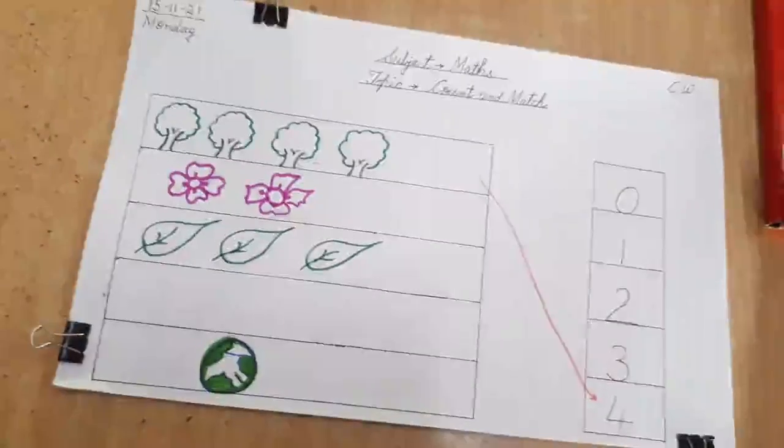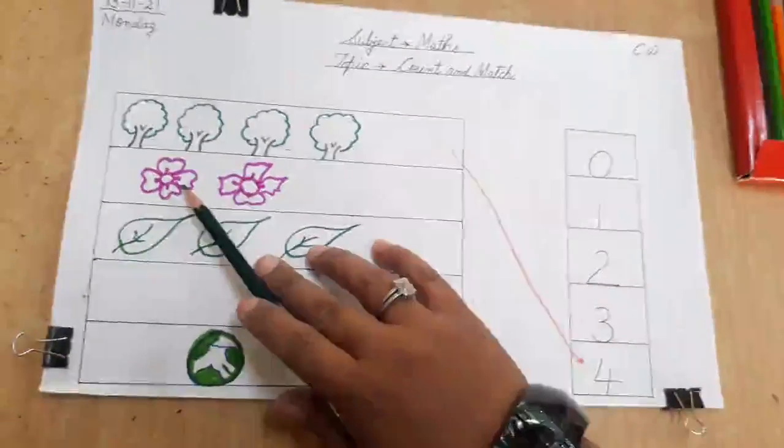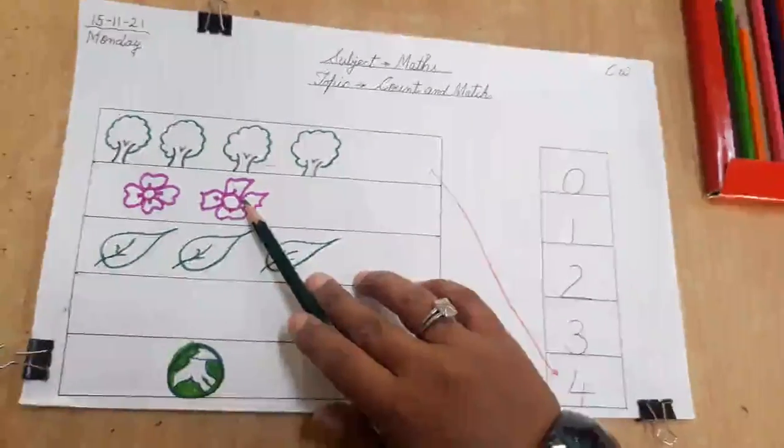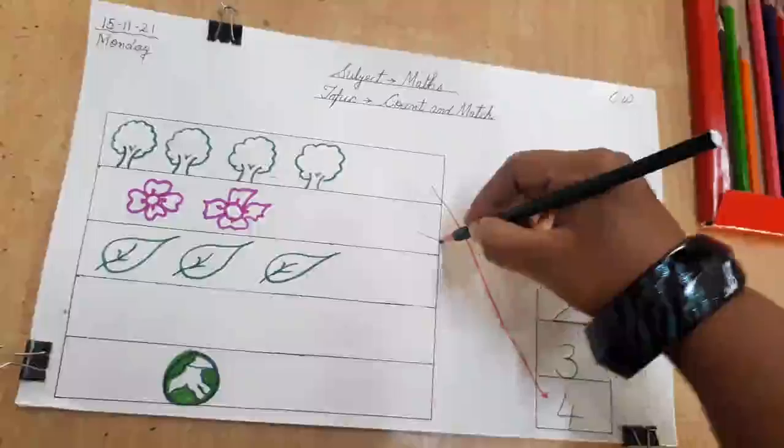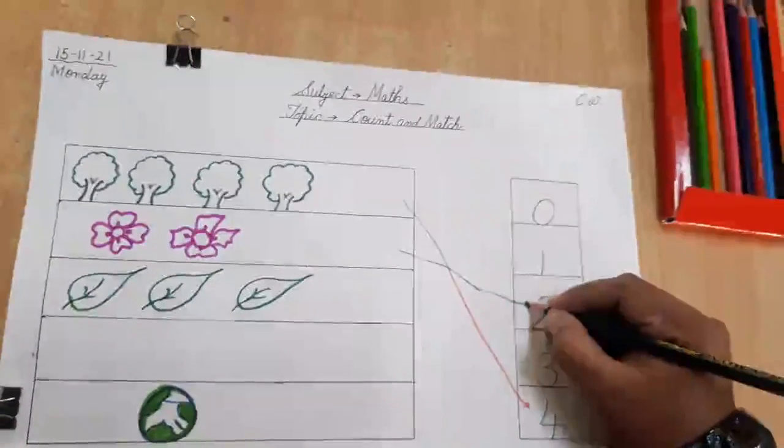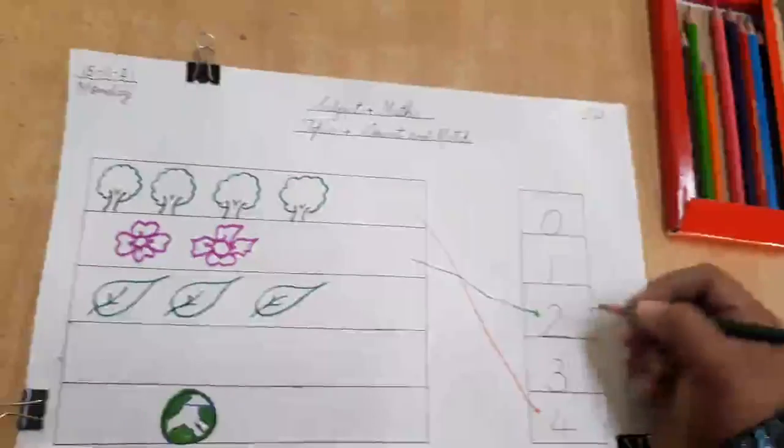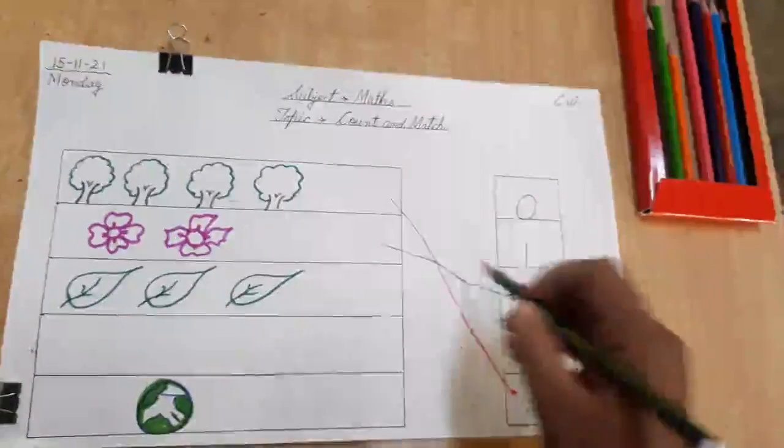Now, the next picture we have is that of flowers. How many of them we have? 1, 2. We have 2 flowers. So, we will match this with number 2 here. Clear? 2 flowers. We have 2 flowers.